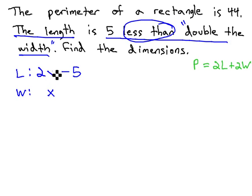Double the width, then, would be 2x. To find the perimeter, we can replace the length in our formula with 2x minus 5, and we can replace the width from our formula with simply x.